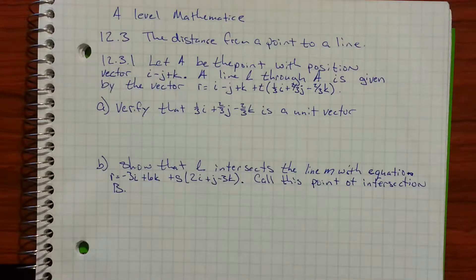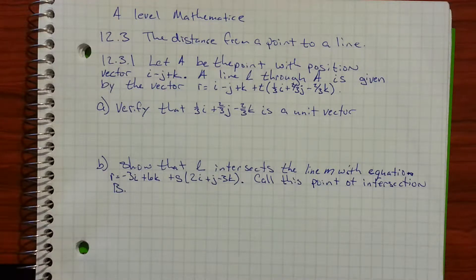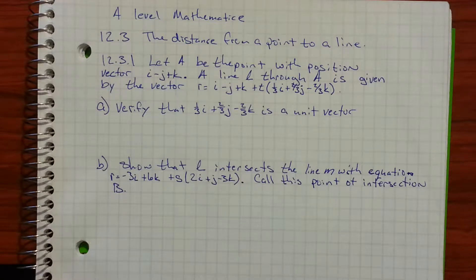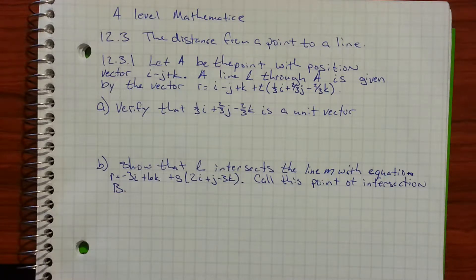This is A-Level Mathematics, Chapter 12.3: the distance from a point to a line. Problem 12.3.1: find the point with the position vector i minus j plus k. A line L through A is given by R equals i minus j plus k plus t times the quantity one-third i plus two-thirds j minus two-thirds k.